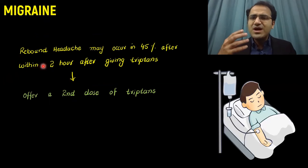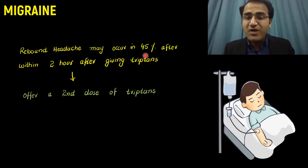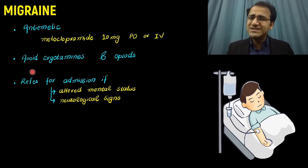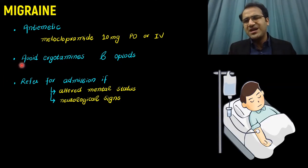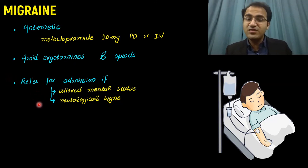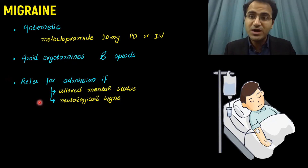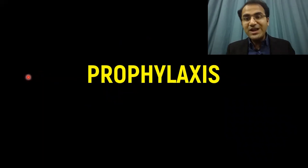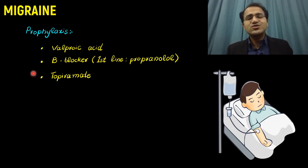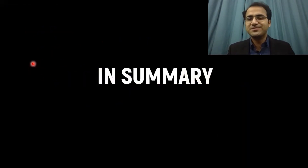When you give a triptan to the patient, rebound headache may occur in 45% of patients within two hours, so you can offer a second dose of triptan after two hours if the patient experiences a rebound headache. In migraine headache there is also nausea and vomiting, so give anti-emetics — metoclopramide 10 mg orally or IV — and avoid ergotamines and opiates. Refer for admission if the patient has altered mental status or persistent neurological signs to exclude other pathologies. For prophylaxis of migraine, options include valproic acid, beta-blockers including propranolol, and topiramate — beta-blockers are generally preferred.